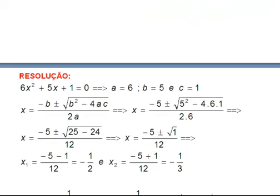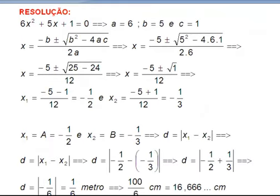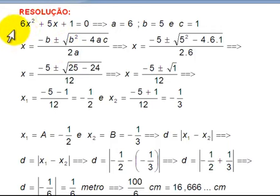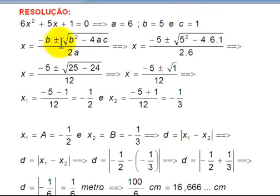Let's solve this. I'll solve the quadratic equation and find the roots. For 6x² + 5x + 1 = 0, we have a = 6, b = 5, and c = 1. These are the coefficients. In Bhaskara's formula, a is the coefficient of x², b is the coefficient of x — so +5 — and c is the independent term equal to 1. Bhaskara's formula: x equals minus b, plus or minus square root of b² minus 4ac, all over 2a.